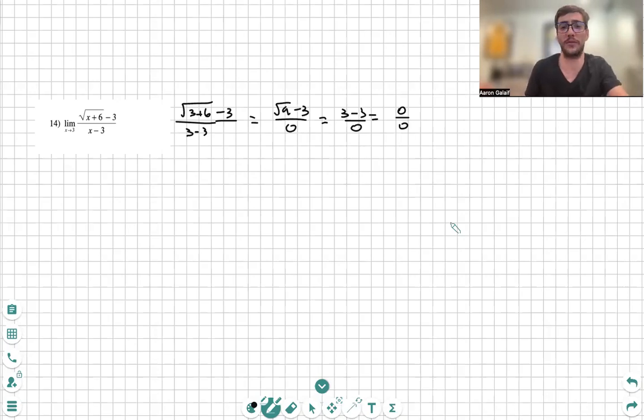So, in order to solve this limit, what we need to do is somehow factor or cancel out the denominator, so we no longer have a 0 on the denominator. We know I'm never allowed to divide by 0, so 0 must not be in the denominator.